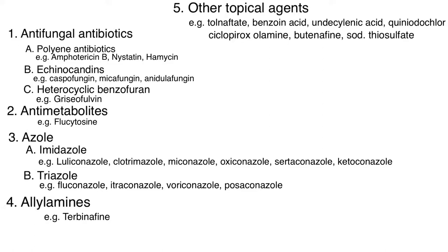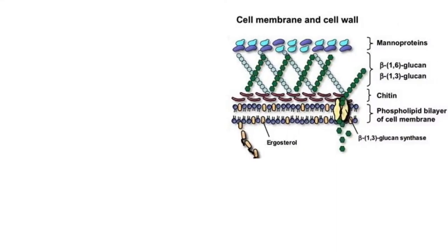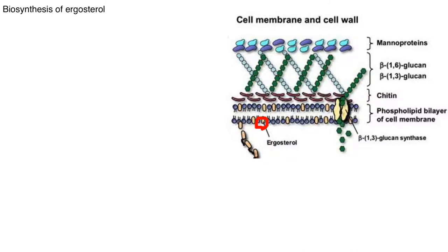Before discussing mechanisms of action, I will explain how the fungal cell membrane is synthesized, because most drugs interfere with fungal cell membrane synthesis to stop or kill the fungi. The fungal cell membrane is composed of phospholipids and ergosterol, so we will discuss the biosynthesis of ergosterol.